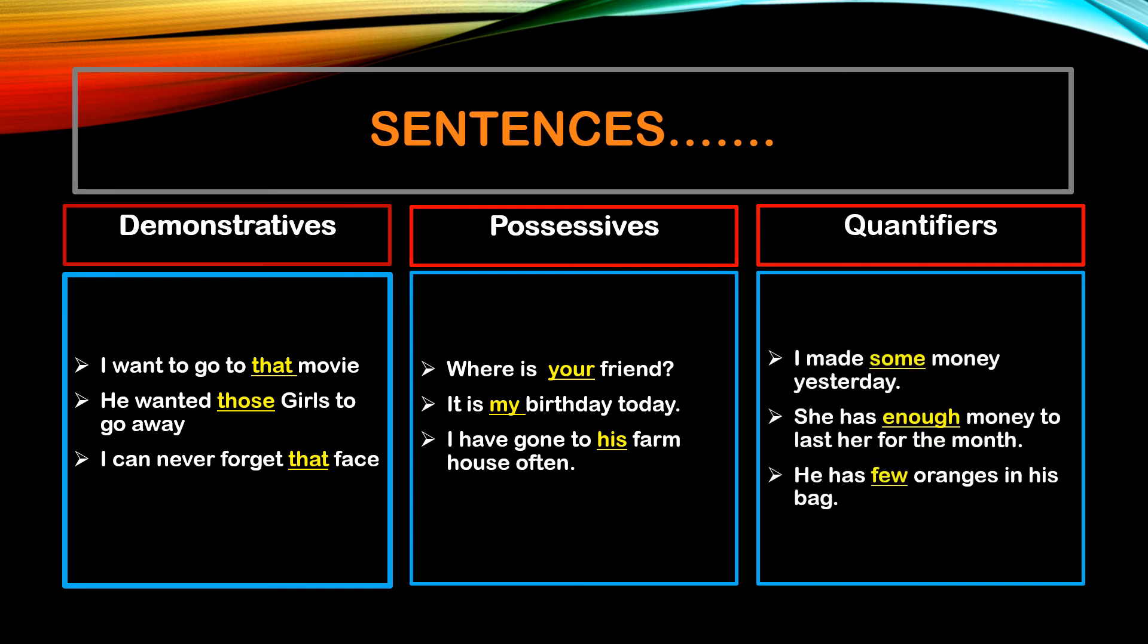I made some money yesterday. Again, 'money' is your noun and the word coming before it is 'some,' so 'some' is your determiner. She has enough money to last her for the month. 'Enough' is coming before the noun 'money.' He has few oranges in his bag. 'Oranges' is noun and the word which comes before it is 'few.'